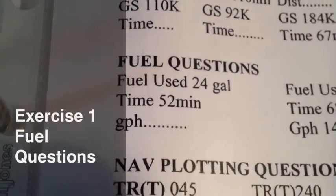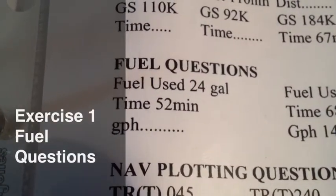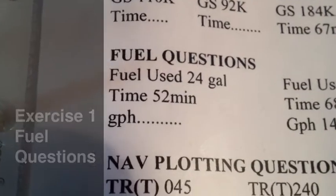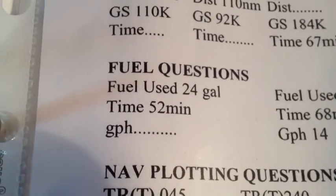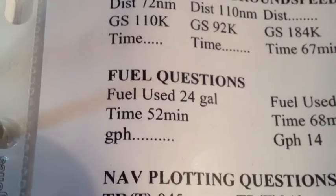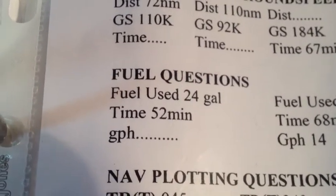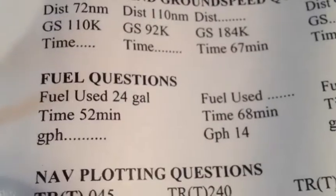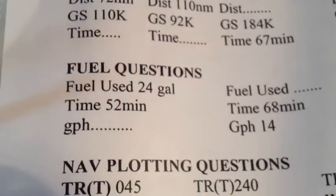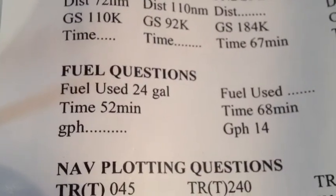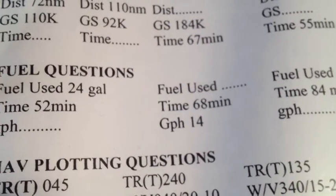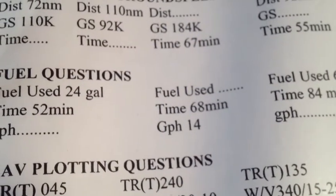Continuing on with our exercises from exercise set number one, we're going to take a look at fuel questions. We're going to be calculating, given a fuel used and a time, a rate in gallons per hour. We'll also be doing questions where we're given a gallons per hour and a time, and we're going to calculate the amount of fuel used in gallons.